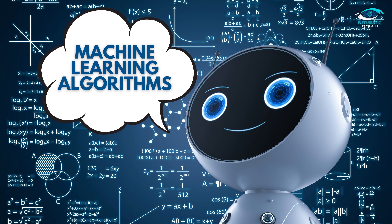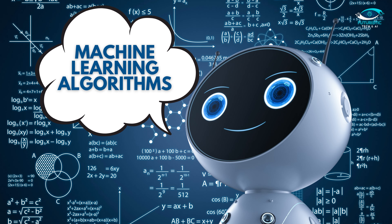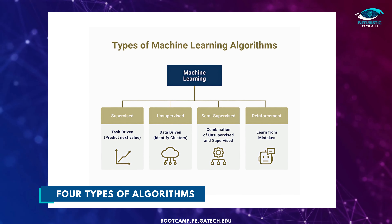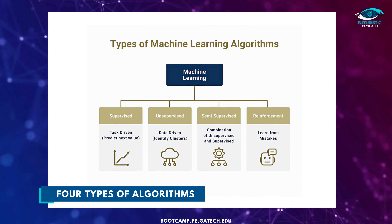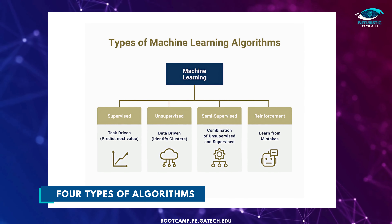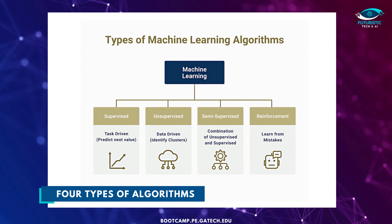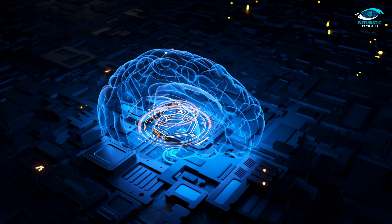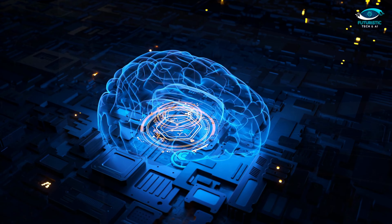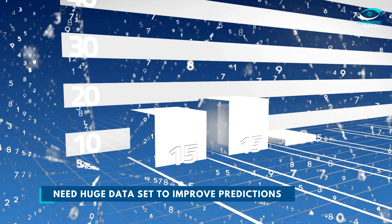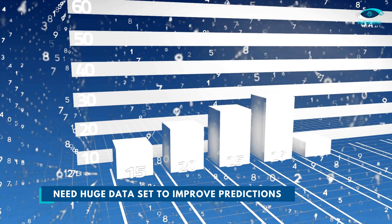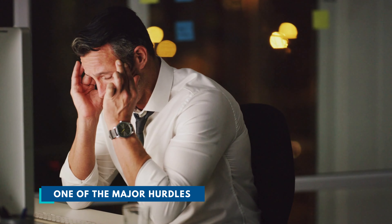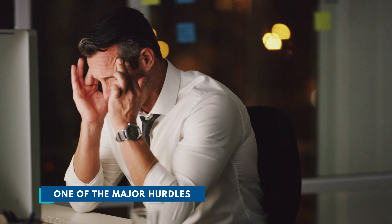Machine learning algorithms are classified according to their ways of learning. There are four types: supervised, unsupervised, semi-supervised, and reinforced learning. To improve the accuracy of predictions, we need a huge dataset, and most of the time this is one of the major hurdles in the machine learning territory.